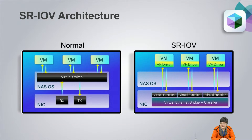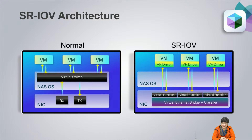Now you can see the architecture comparison. In the normal setup, the network card is connected to a virtual switch, and the VM is connected to the virtual switch too, so there is a 20% performance loss. If you use the SR-IOV feature, the network card is directly passed through to the VM, and your VM can enjoy the network speed directly.